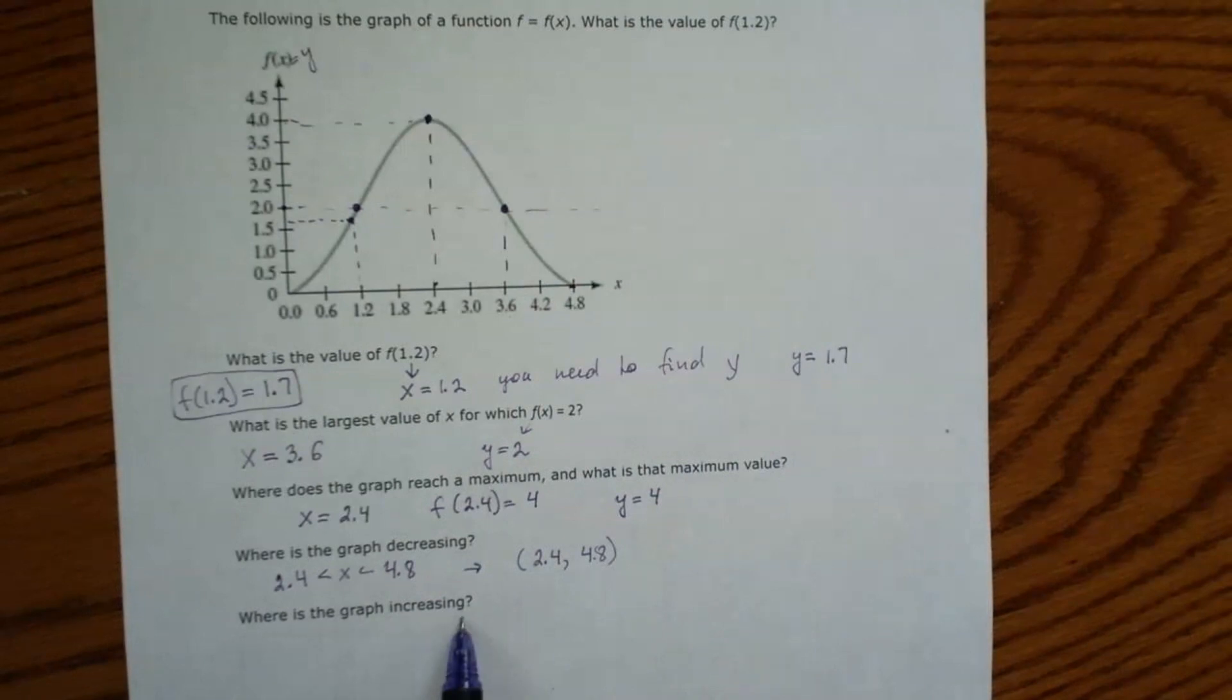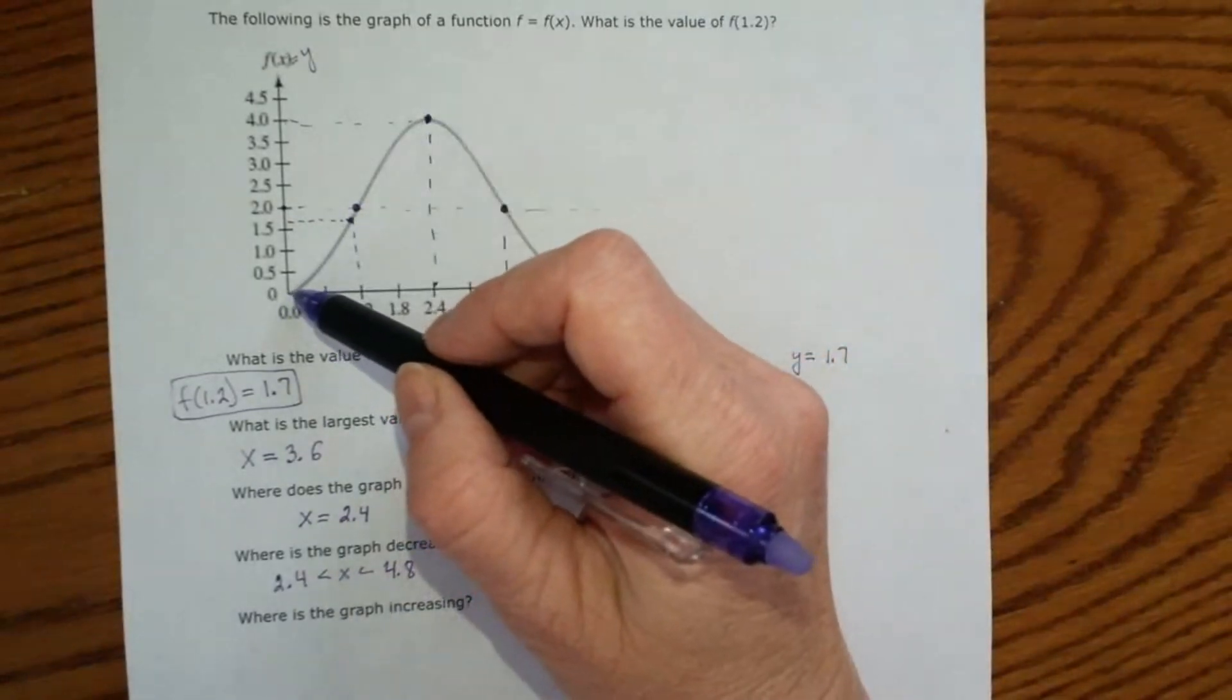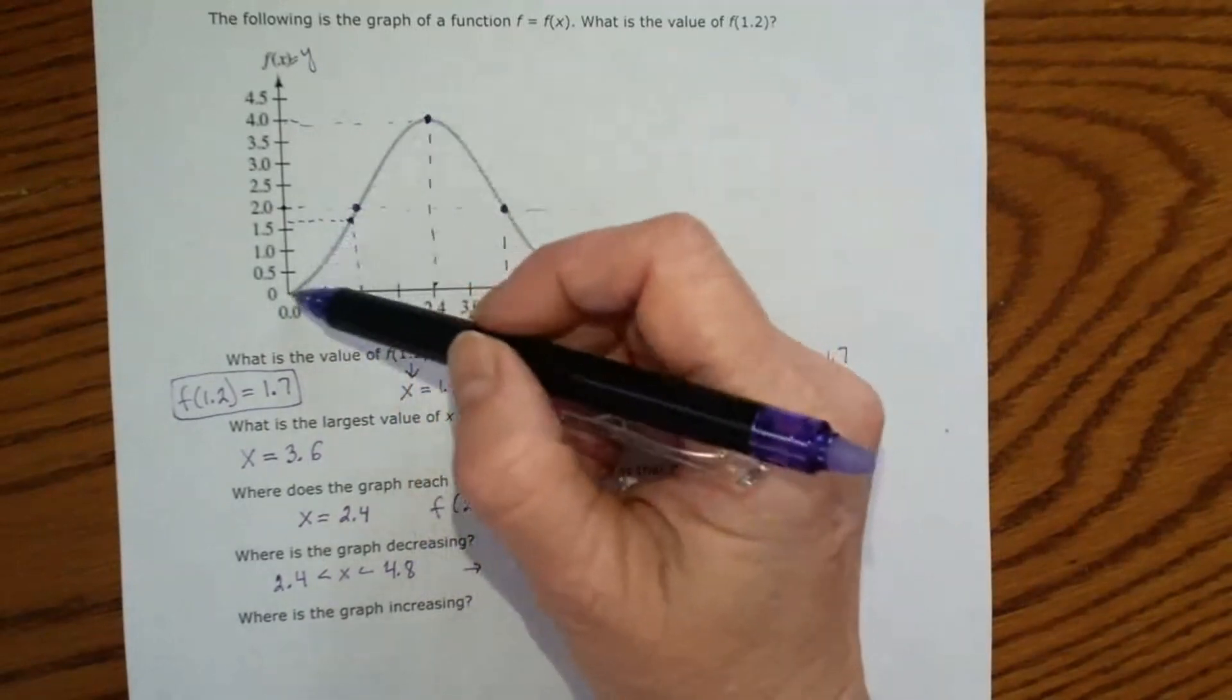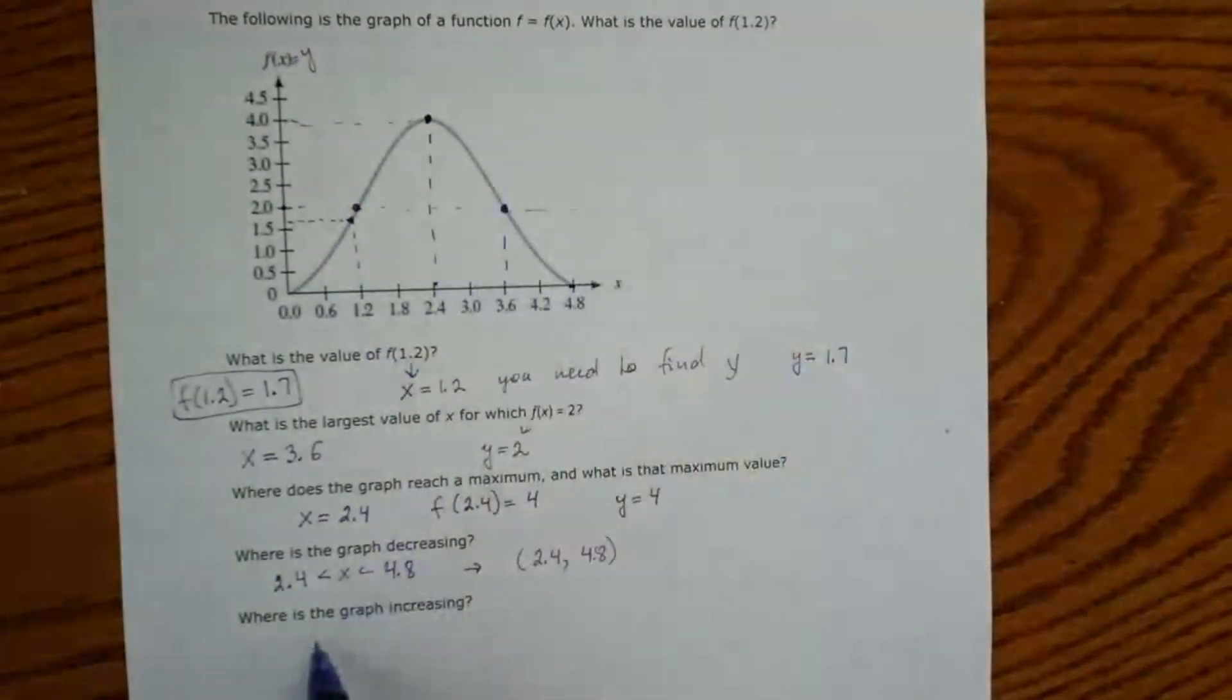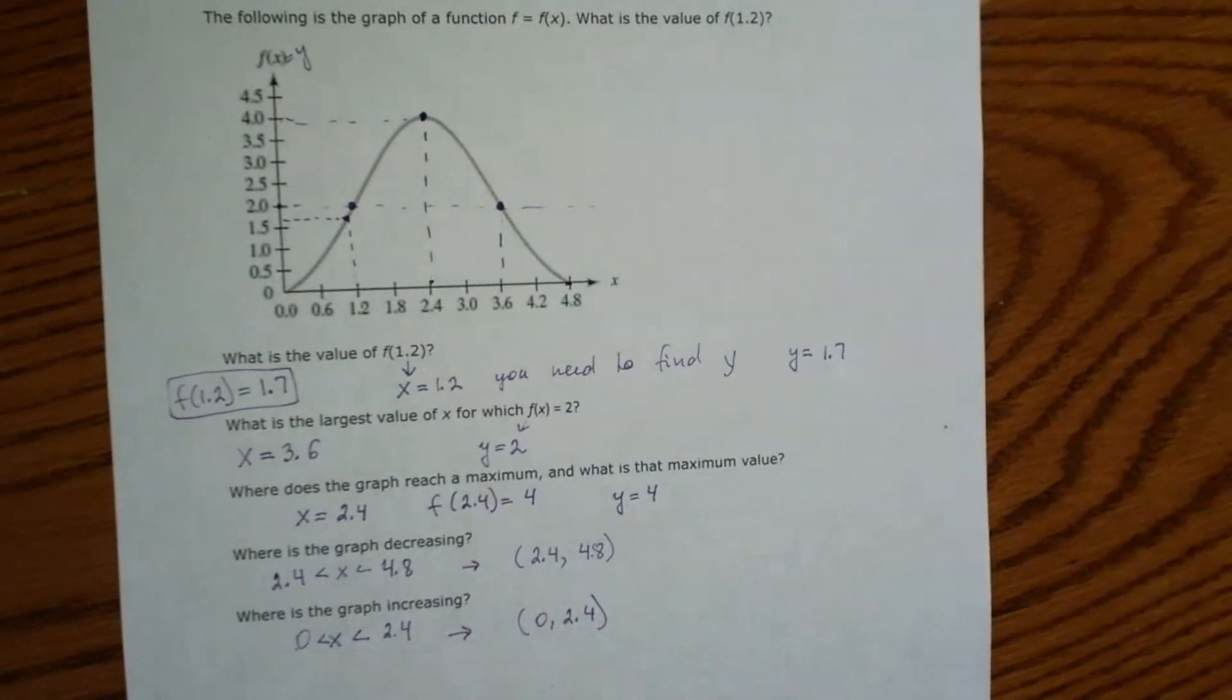Where is the graph increasing? Increasing means that graph is going up. And we see that our graph is going up for any x between 0 and 2.4. So if we have to write our answer in interval notation, it will look like this: (0, 2.4).